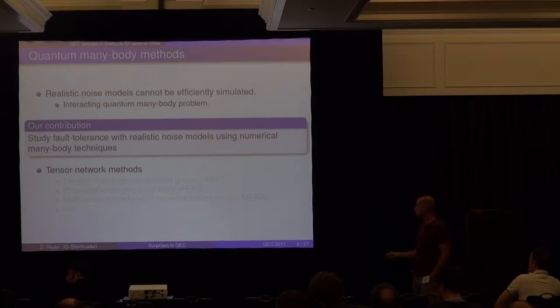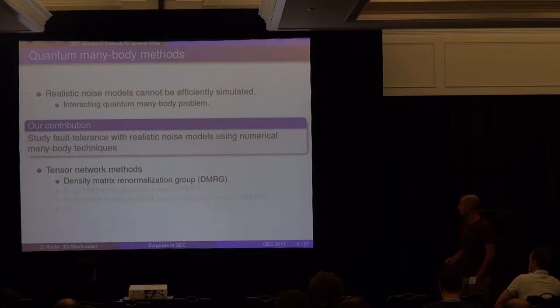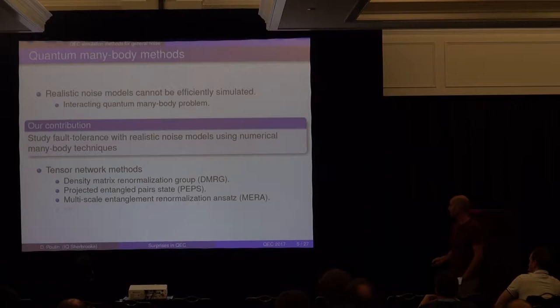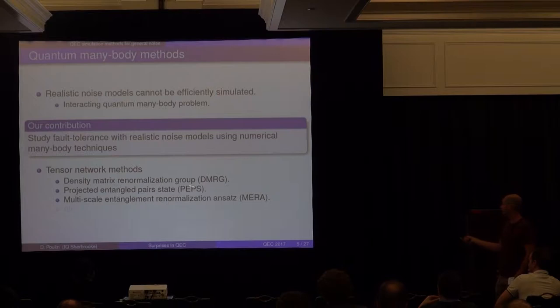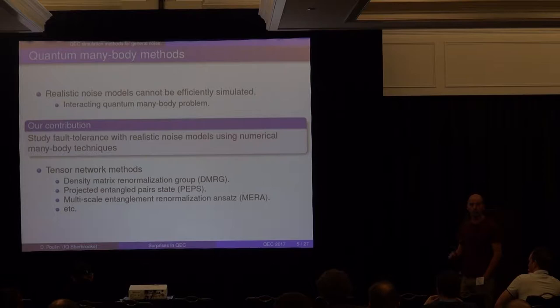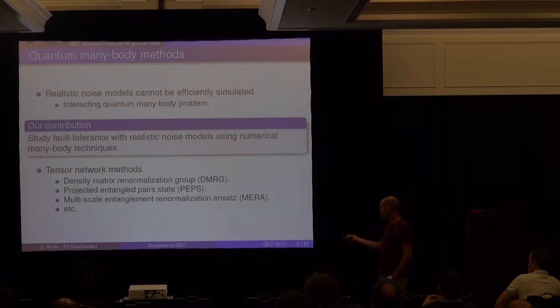Our contribution is studying fault tolerance with realistic noise using numerical methods borrowed from condensed matter physics — specifically quantum many-body physics. These tools are tensor network methods: density matrix renormalization group (DMRG), projected entanglement pair states (PEPS), and multi-scale entanglement renormalization ansatz (MERA). We've used all of these in different contexts for quantum error correction.